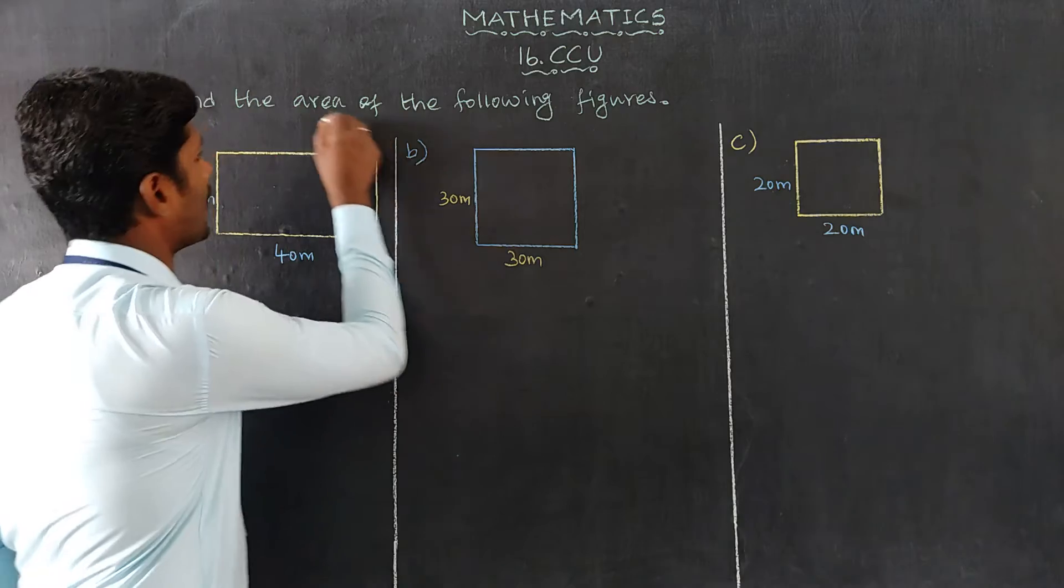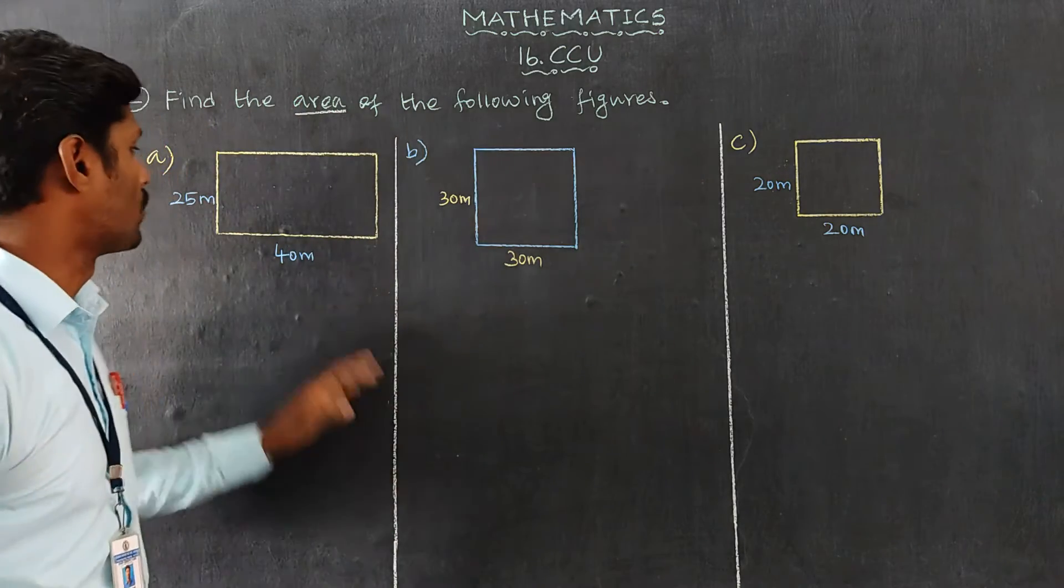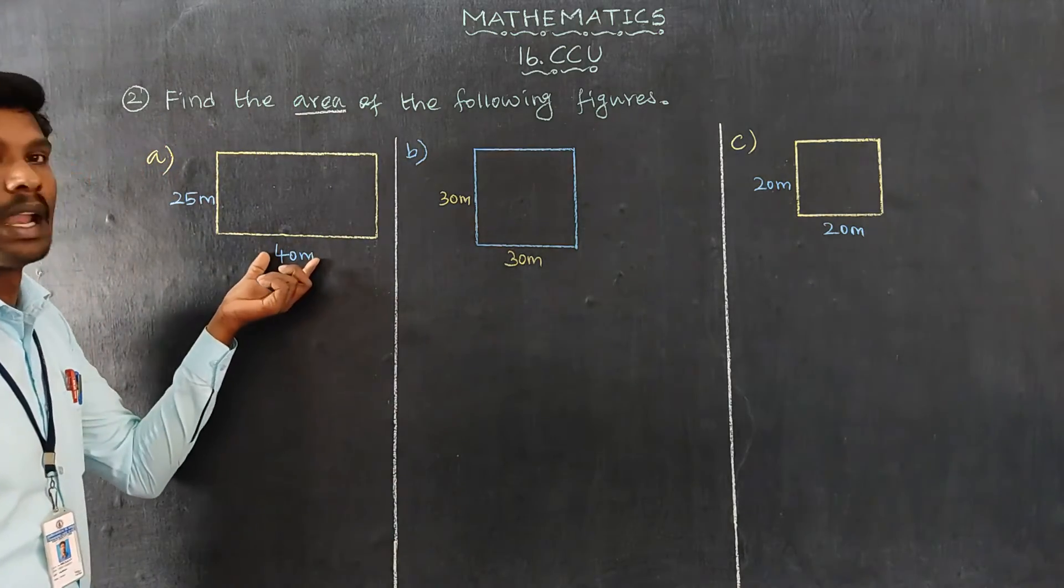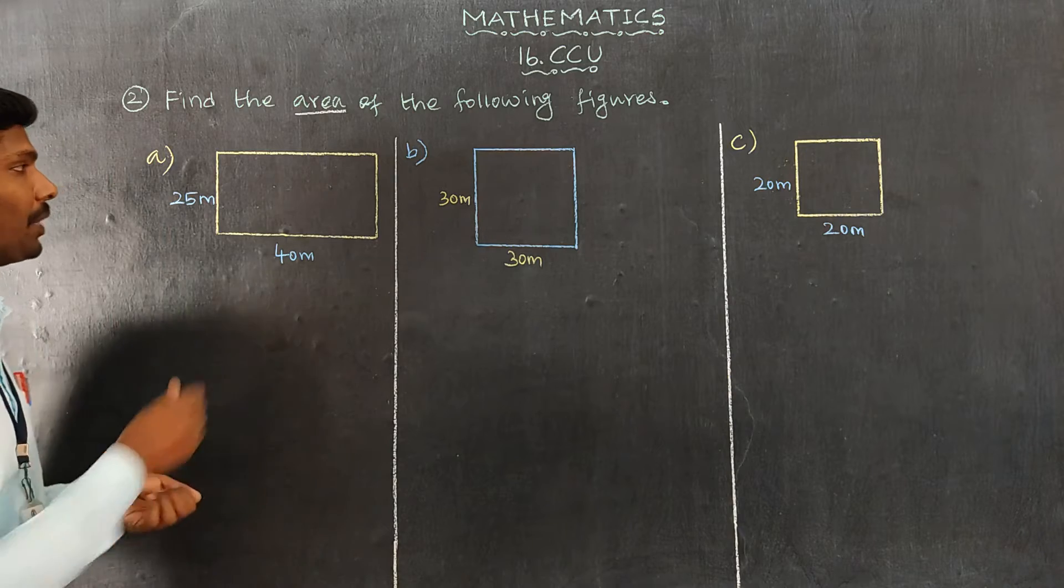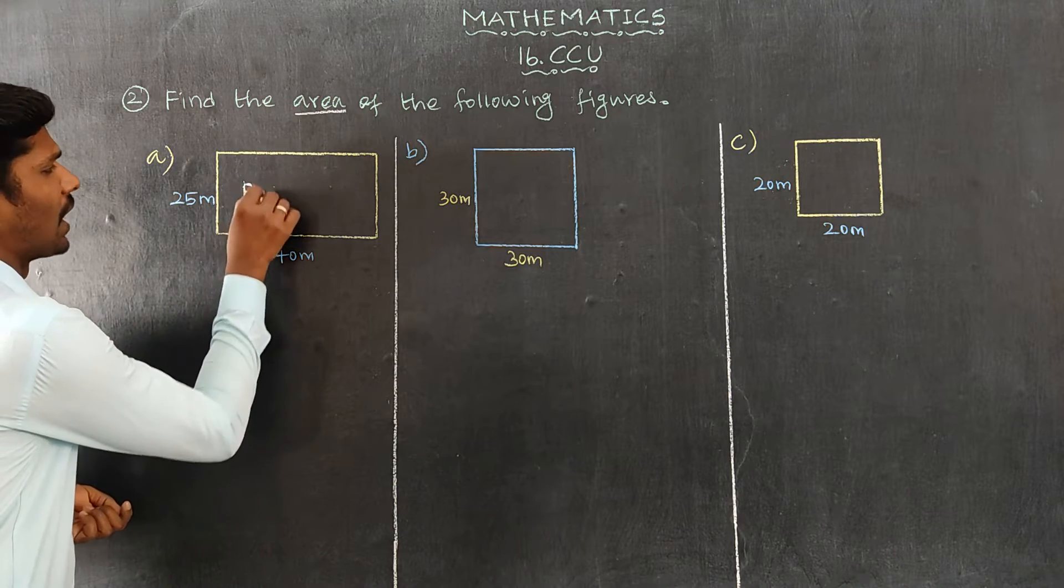Here are three figures. First one, 40 meter length and 25 meter breadth. Different dimensions - this is a rectangle.